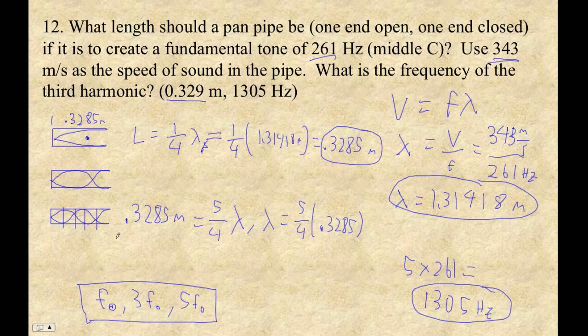So lambda is 5 quarters of 0.3285. And I get that the actual wavelength is 0.26283, et cetera, et cetera, right? Meters, okay? And now I can find the frequency, right?